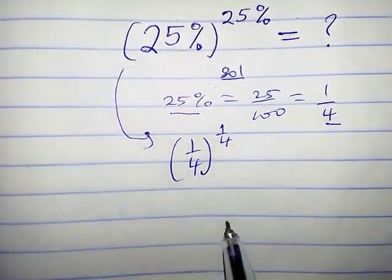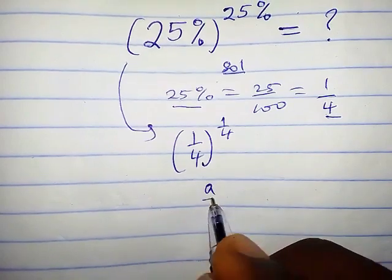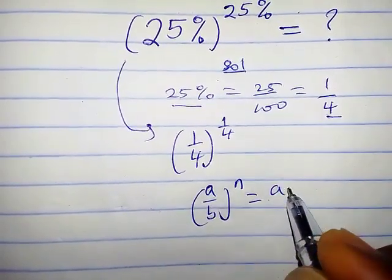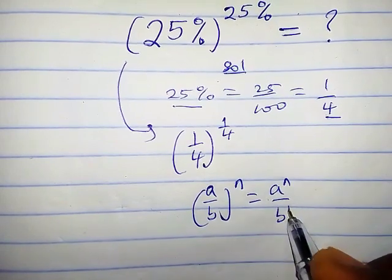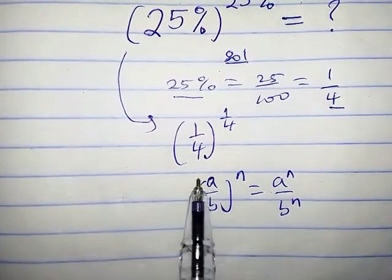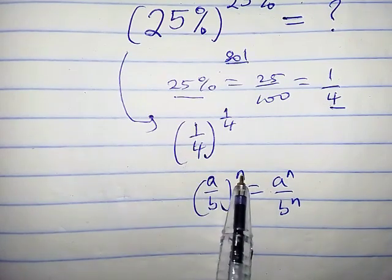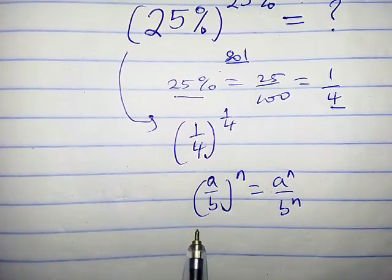Now we have to recall one property. Let's say we have a over b raised power n. This is the same thing as writing a raised power n over b raised power n. By comparison, you observe that a is 1, b is 4, and the power which is n is 1 over 4.